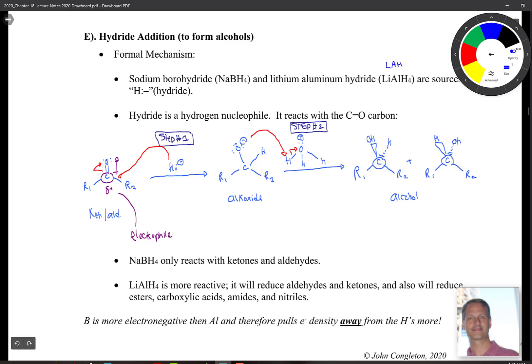If you recall that reaction from the first semester, you have your carbon with a delta plus on it. H minus comes over, grabs a hold of that carbon, and you kick off electrons up to your oxygen. That makes your alkoxide here. Then step two is just a deprotonation. That carbon has the potential to become chiral. In this case, you would have formed a chiral center there.